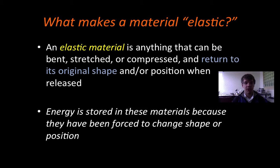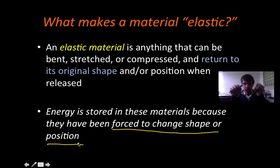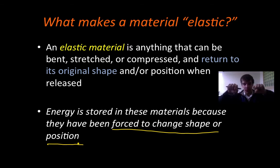In terms of elastic materials in general, what is it exactly that makes a material elastic? An elastic material is defined as anything that can be bent, stretched, or compressed, and returned to its original shape or position when it's released. Energy is actually stored in these materials because they've been forced to change shape or position. All that energy used to bend the material is now stored inside of it so that when released, it bounces back and that energy is released.